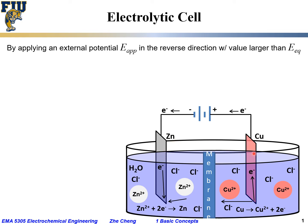You are applying an external voltage in the reverse direction, which means electrons trying to flow out from the negative electrode are now trying to come into the zinc, while electrons are drawn from the copper. This is achieved by applying an external power supply in reverse direction connected to the original electrochemical cell. The external potential applied must be larger than the equilibrium cell potential for the natural galvanic cell. Under this condition, the cell current will be reversed — instead of electrons flowing from zinc to copper, we now draw electrons from copper and pump them into the zinc.